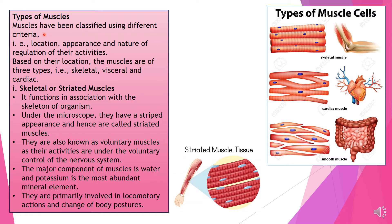Muscles have been classified using different criteria. On the basis of their location, muscles are categorized into skeletal muscles (striated or voluntary muscles), cardiac muscles present in the walls of the heart, and smooth muscles present in the soft organs of the body like the stomach, small intestine, and large intestine.